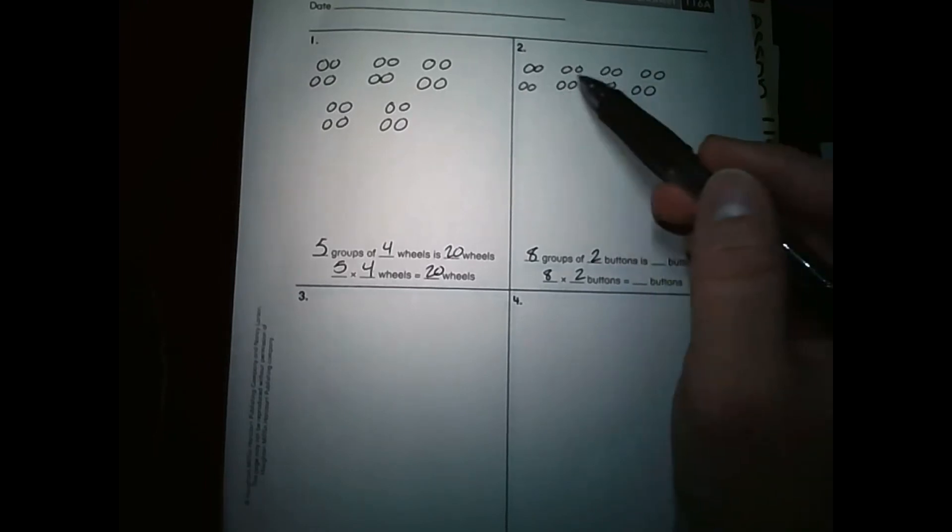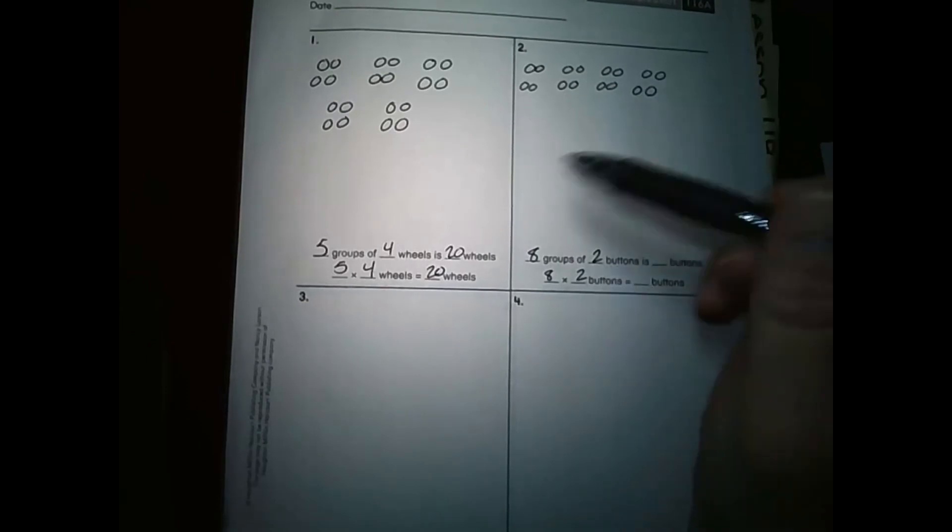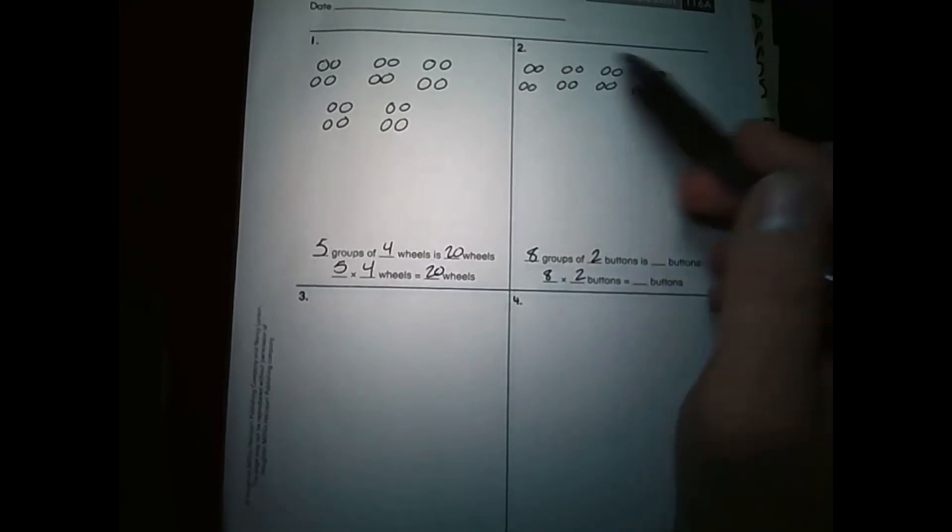Let's go ahead and count how many buttons we have all together. We have one, two, three, four, five, six, seven, eight, nine, ten, eleven, twelve, thirteen, fourteen, fifteen, sixteen. So out of my eight groups of two, we have sixteen buttons. So that means I know eight times two is sixteen.